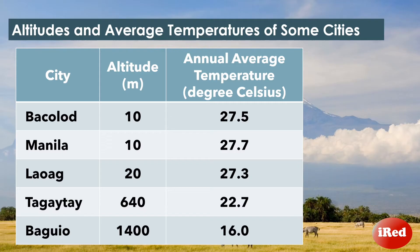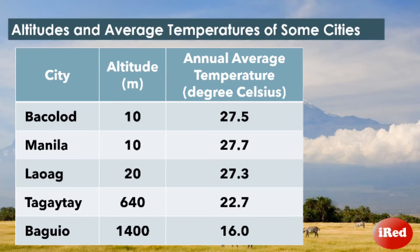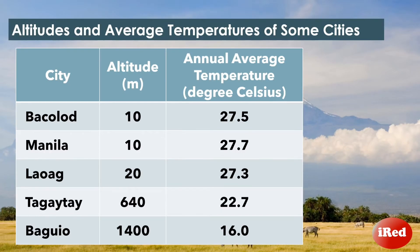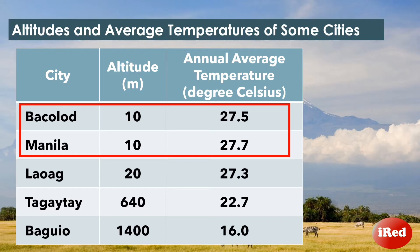The table shows their altitudes and average annual temperatures. Based on the data, the cities have different annual average temperatures, and that implies they have different climates. We can see that the cities with the highest average annual temperatures — Manila and Bacolod, which are 27.5 and 27.7 degrees Celsius respectively — have the lowest altitude, which is 10 meters above sea level.